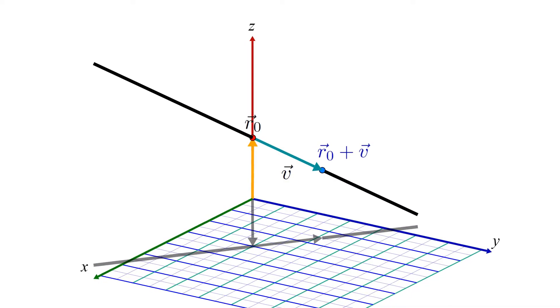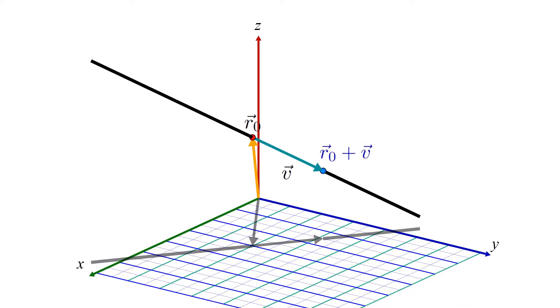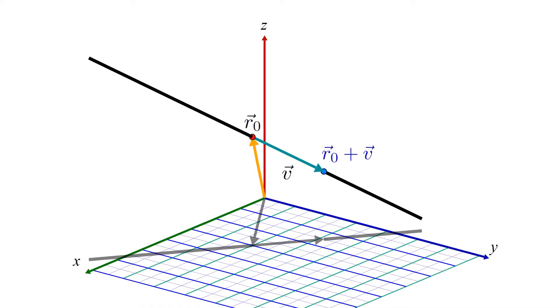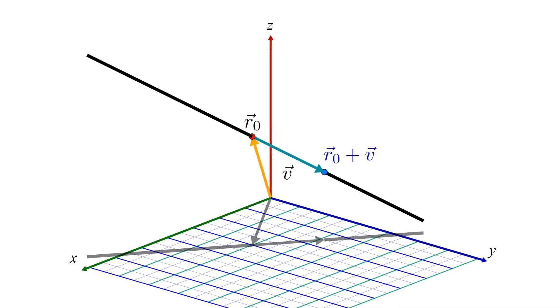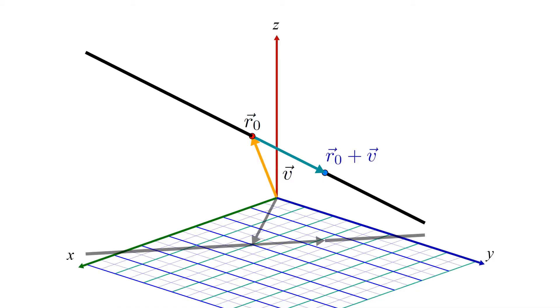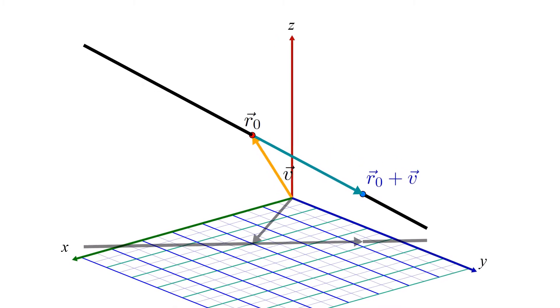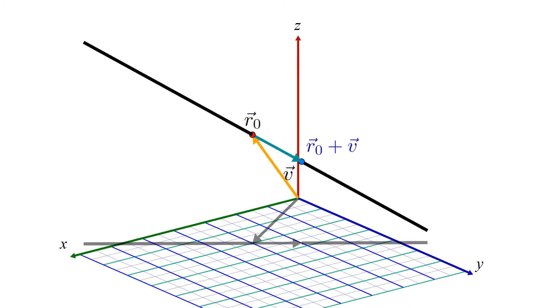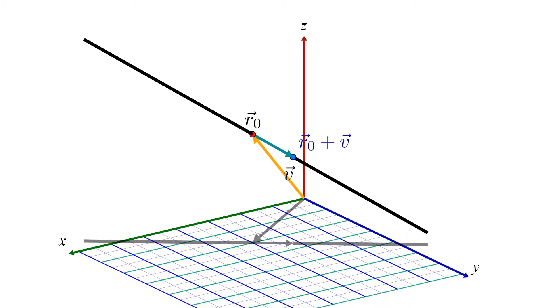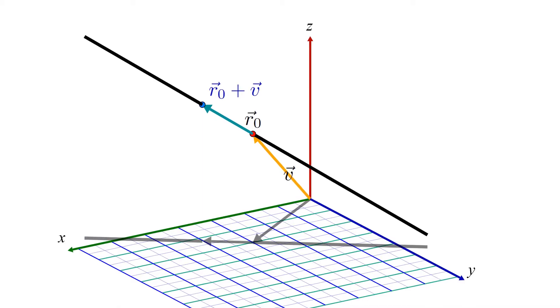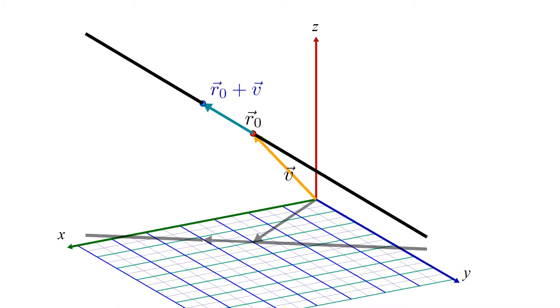Now, the thing to observe here is that the precise length of the green direction vector v doesn't actually matter in defining the line, as long as it's not zero length. If we make it longer, its tip will be in a different position, but it will still be at a point on the line. And the same thing happens if we make the v vector shorter. In fact, we can even flip the v vector over backwards, and its tip still defines a point on the line.